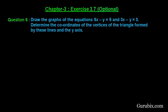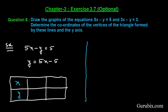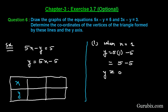First, we shall take the first equation: 5x minus y equals 5. We write y in terms of x, giving y equals 5x minus 5. We draw a table with two rows and three columns for x and y. When x equals 1, y equals 5 times 1 minus 5, which is 0. So point A has coordinates (1, 0).